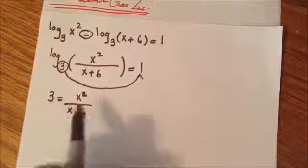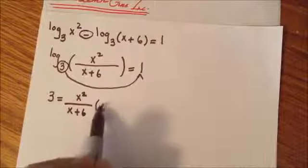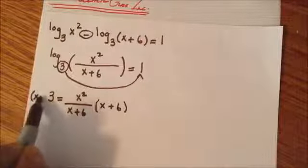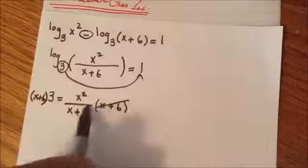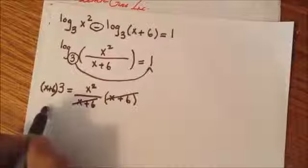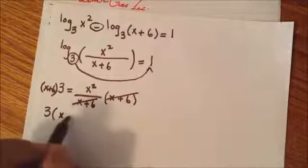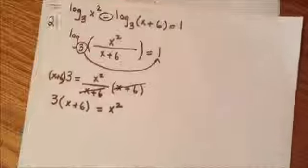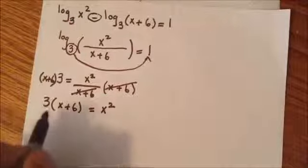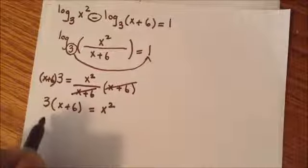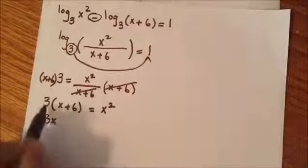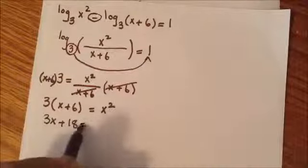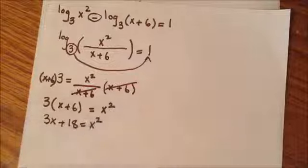I'm going to multiply both sides by x plus 6. These two divide out, so I'll be left with 3 times x plus 6 equals x squared. Now we can just simplify this: 3 times x is going to give me 3x, 3 times 6 is going to be 18, so I'm going to have 3x plus 18 equals x squared.